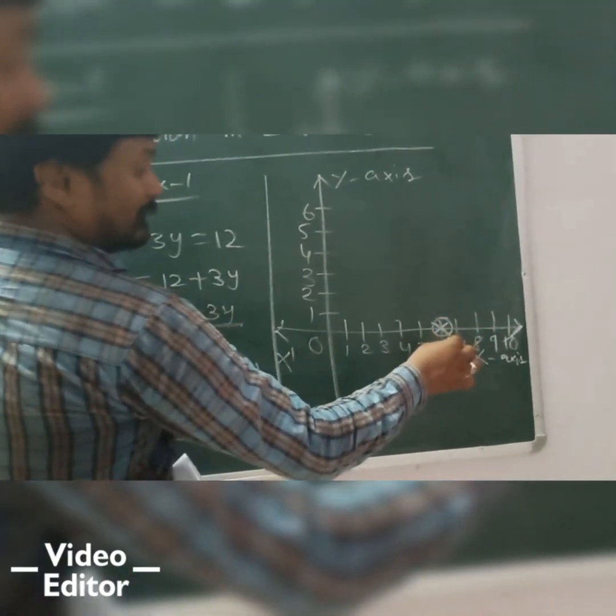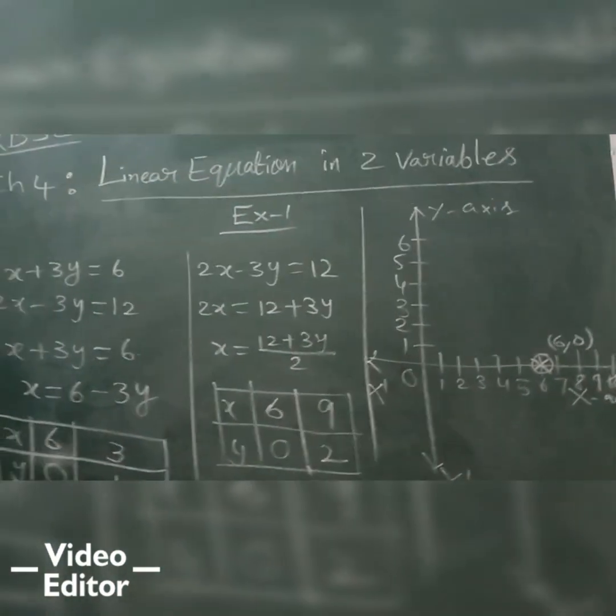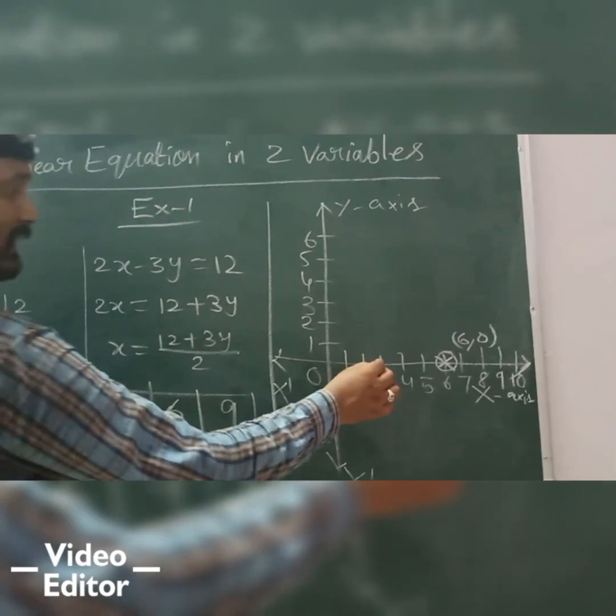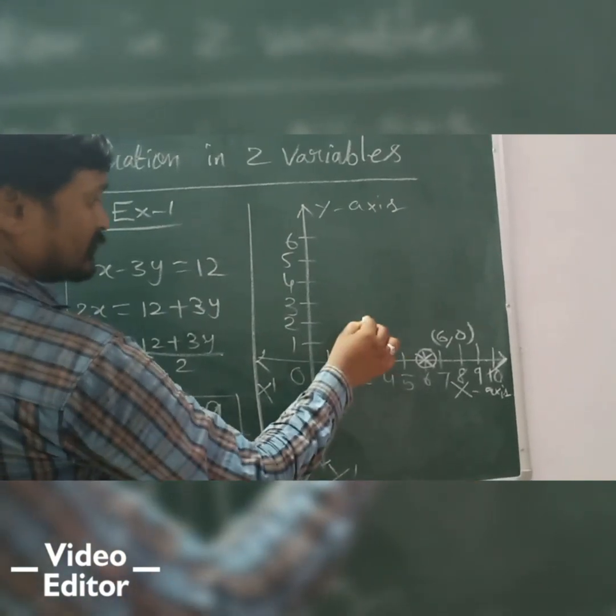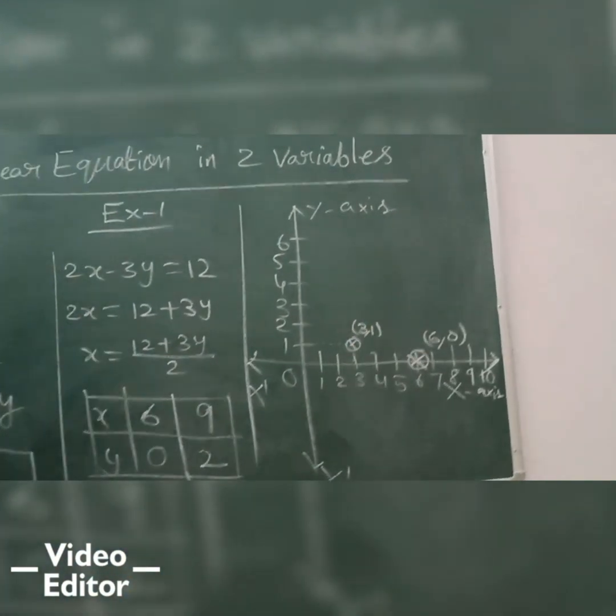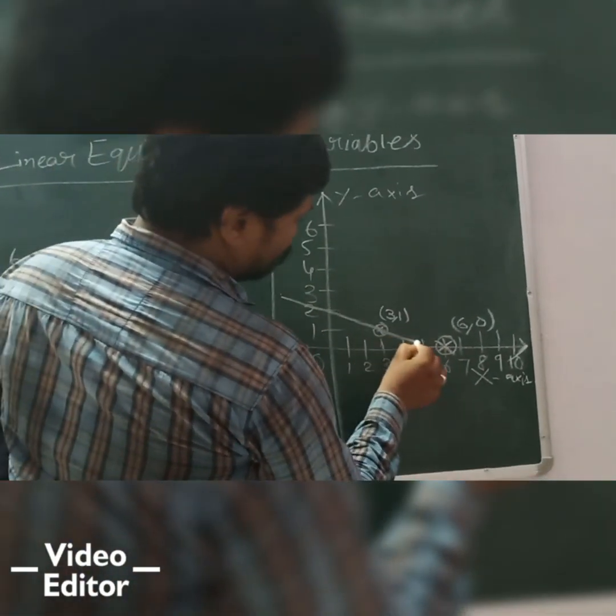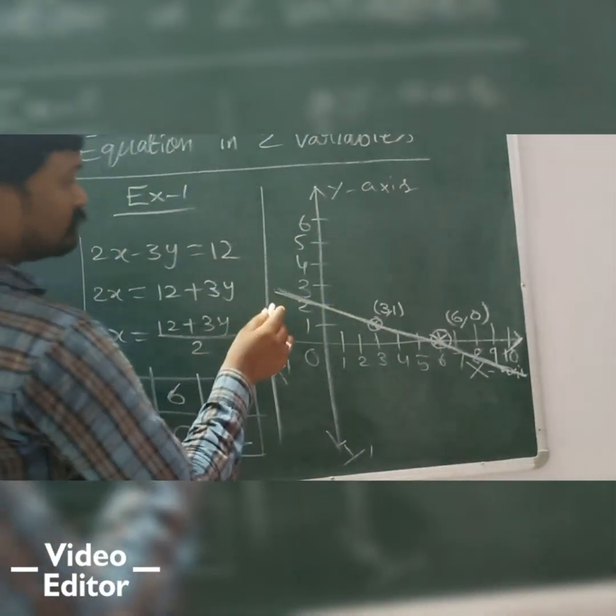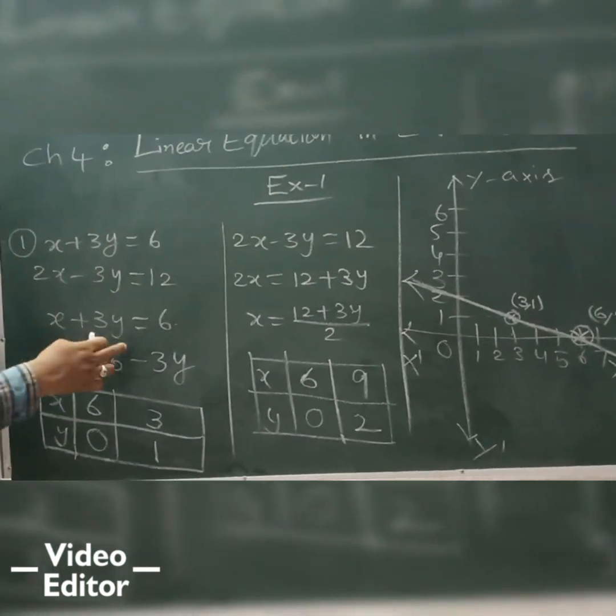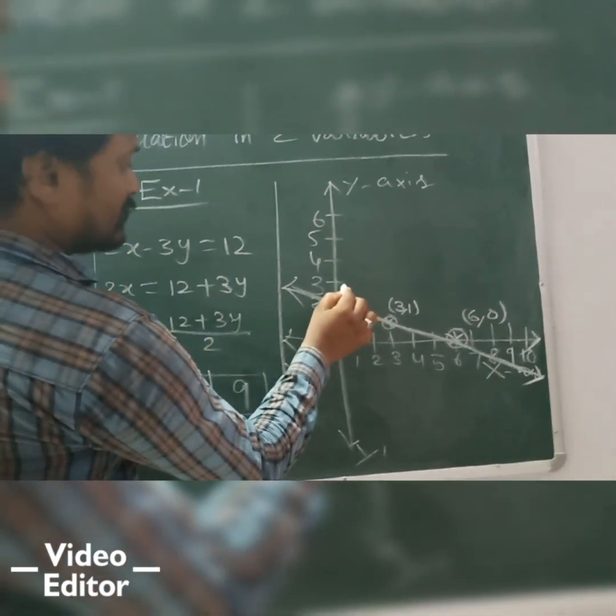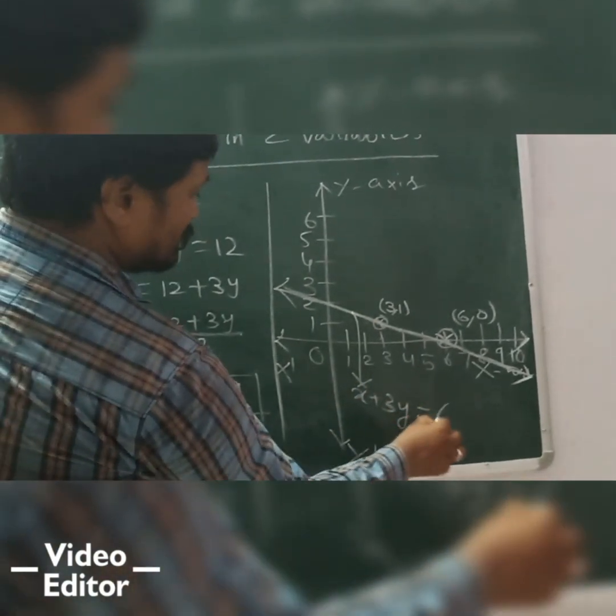Next one here, 3, 1. So, x is 3. And y will be 1. So, this is your point. So, this is 3, 1. So, now, if two points are there, join these two points. So, what do we get? Then what is this equation name? Equation name is x plus 3y is equal to 6.